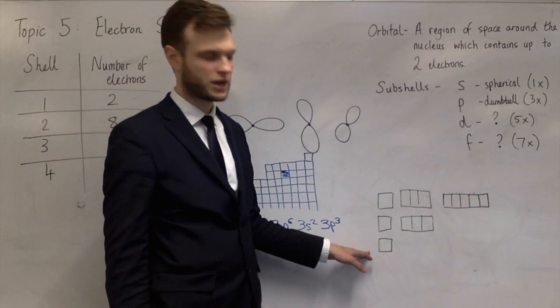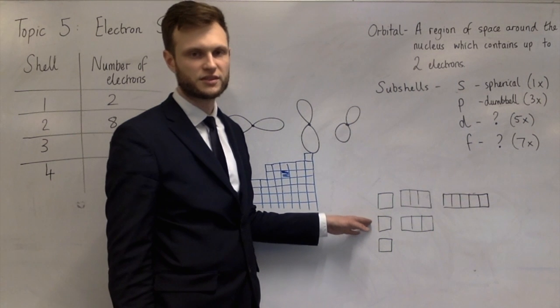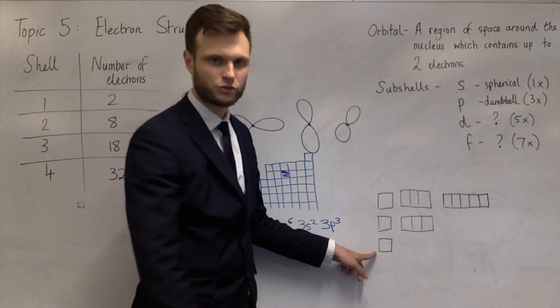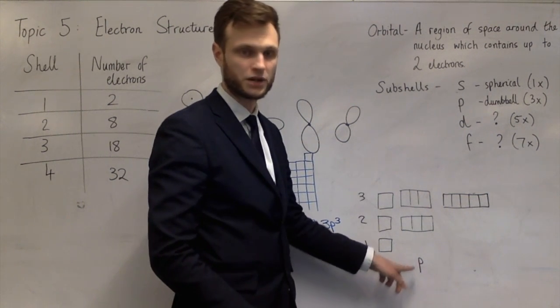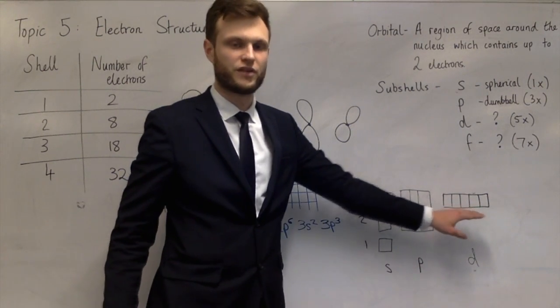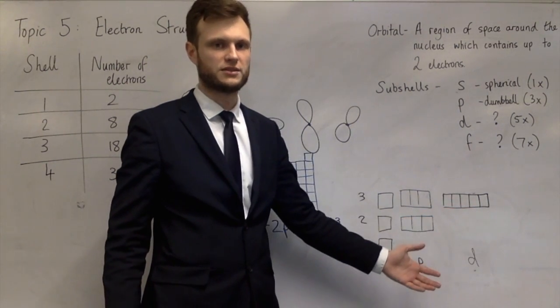I've just drawn the first few boxes. This is the first shell. These boxes represent the second shell. These boxes represent the third shell. So this is an S orbital. This is the P subshell, which contains three P orbitals. They're connected to those boxes. And then this represents the five D orbitals of the D subshell.